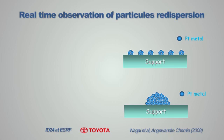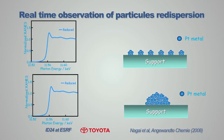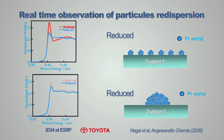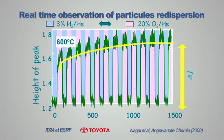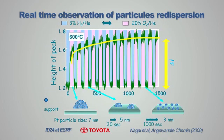They did this by measuring the platinum L3-XANES signal. This signal has a white line which changes height when the platinum goes from the reduced state to the oxidized state. This change in height, delta J, is very large when the particles are small, and very small when the particles are large. By following the evolution of delta J as a function of time, they had a diagnostics tool that allowed them to optimize and design a support which actually favors redispersion of these particles, contrary to sintering.